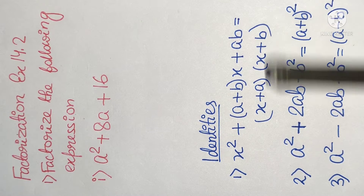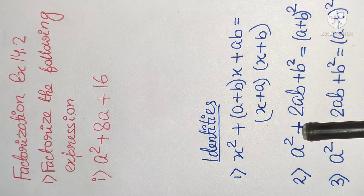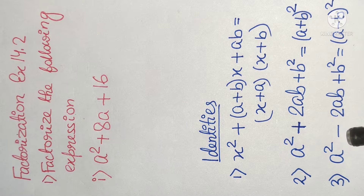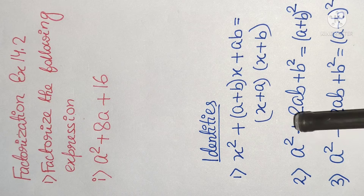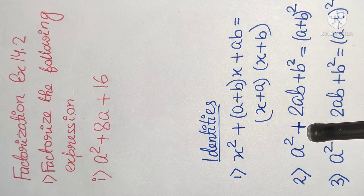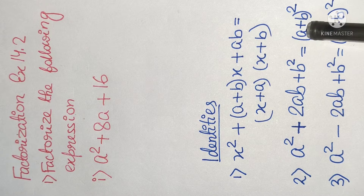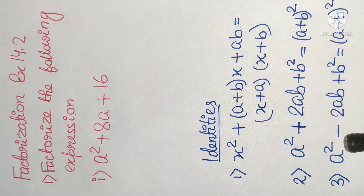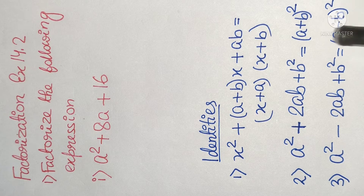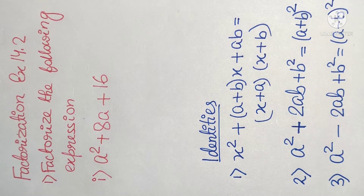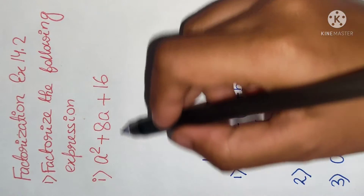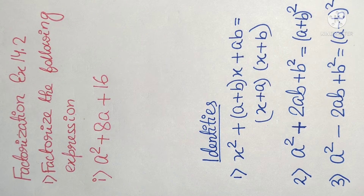The difference between the second identity and the third identity is: if plus is there, then (a + b)²; if minus is there, then (a - b)². So let us find out which identity we can apply here.